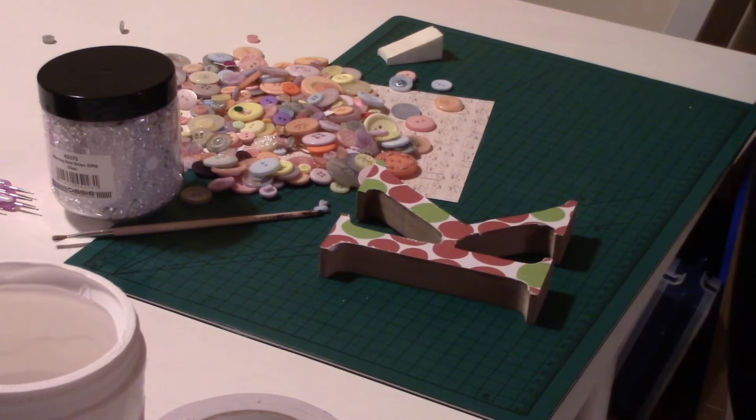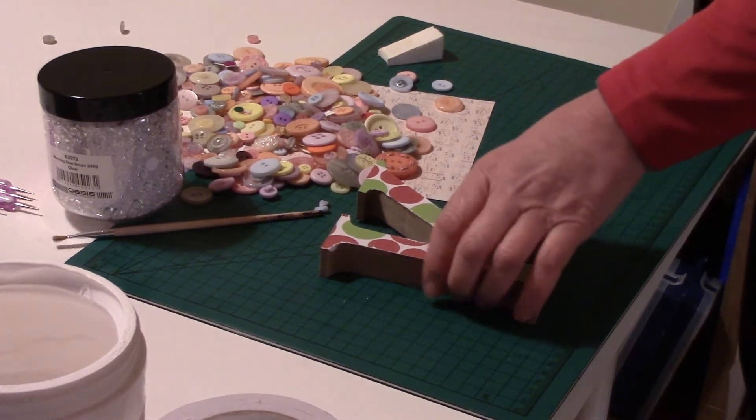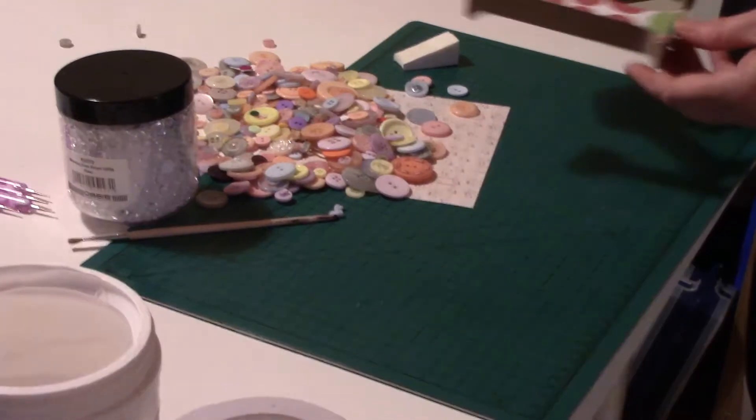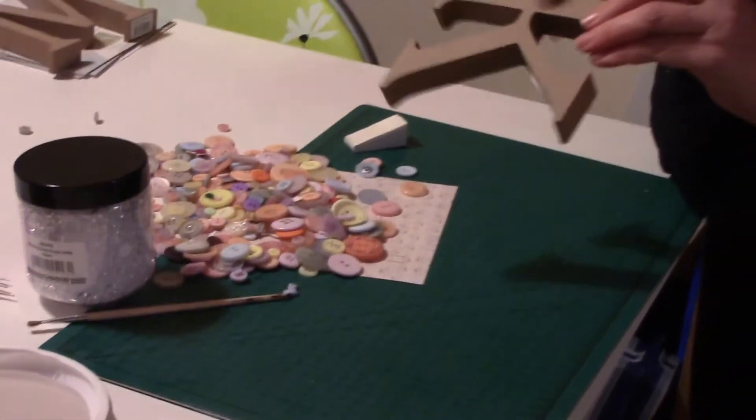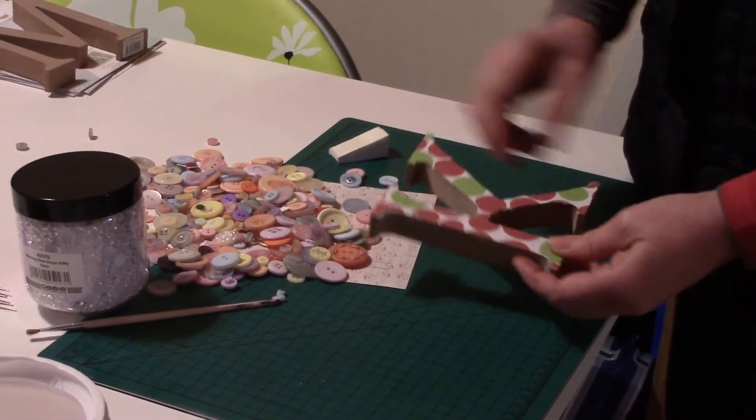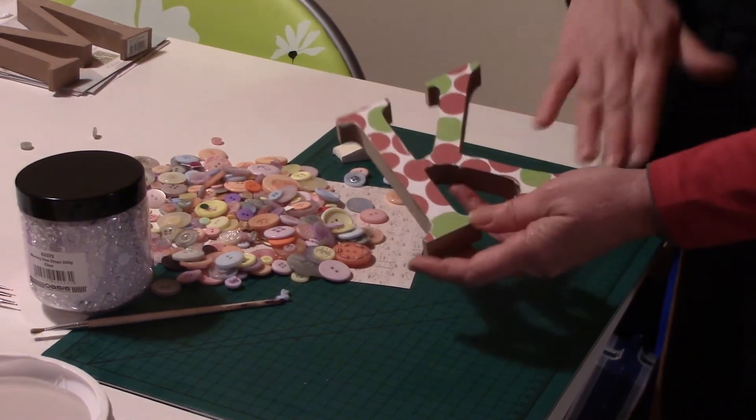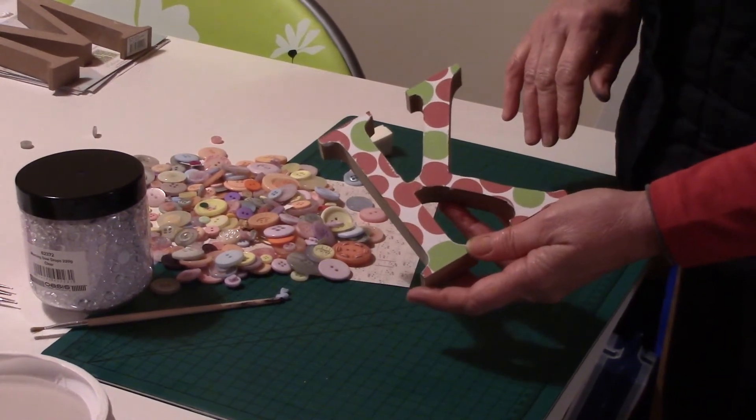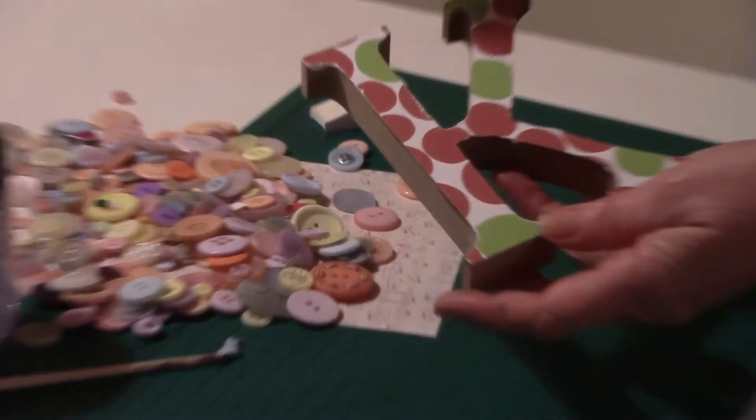Hi again, it's the Irish Scrapper back with another quick tutorial. As I said in a previous video, I've had lots and lots of these MDF letters that I bought and I've been doing nothing with them. So what I've done with this K is I've just very roughly covered it in paper. It won't be seen, it's just to give it a bit of a background.